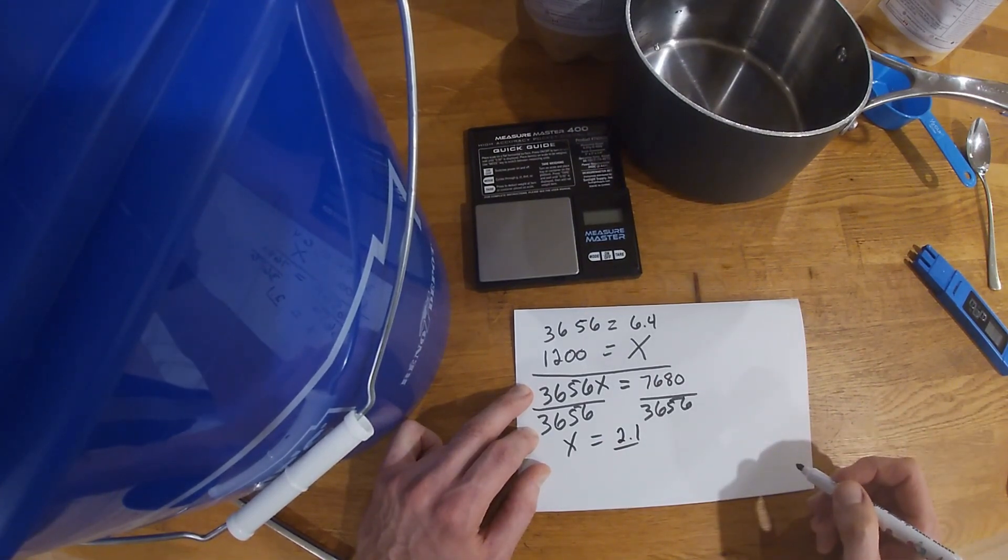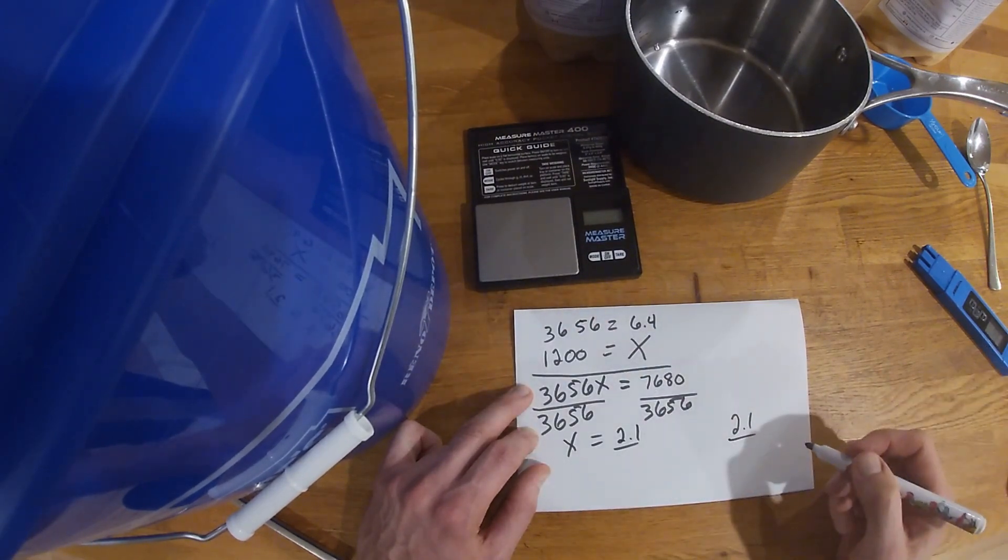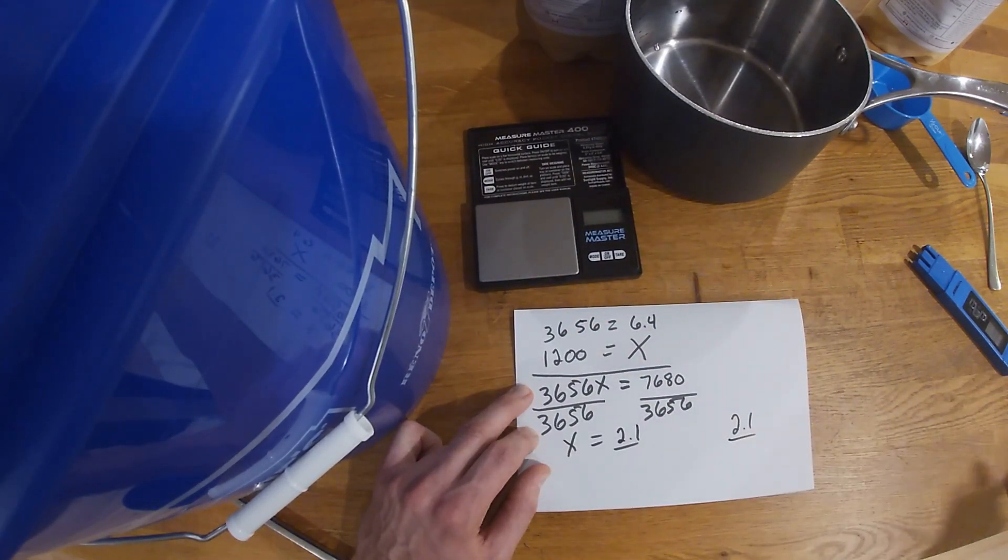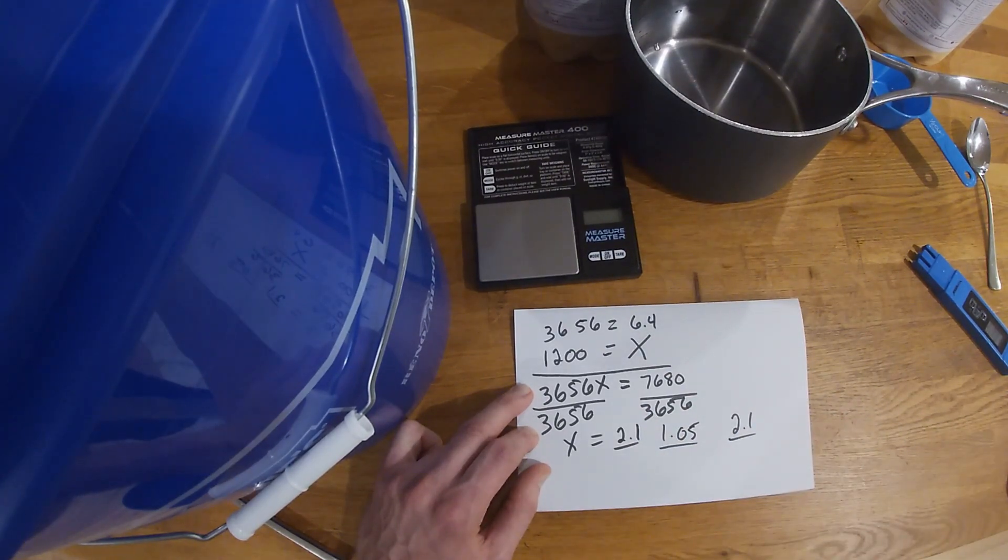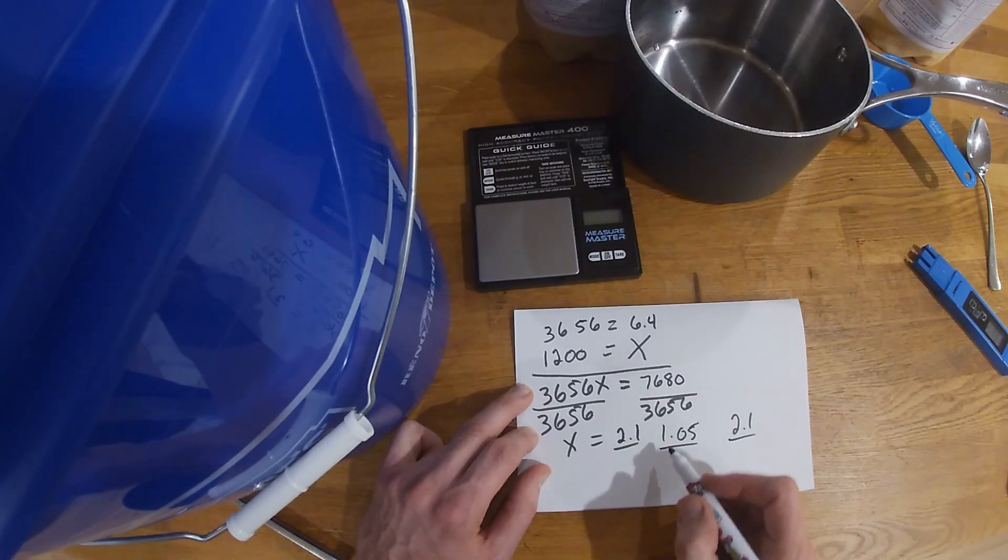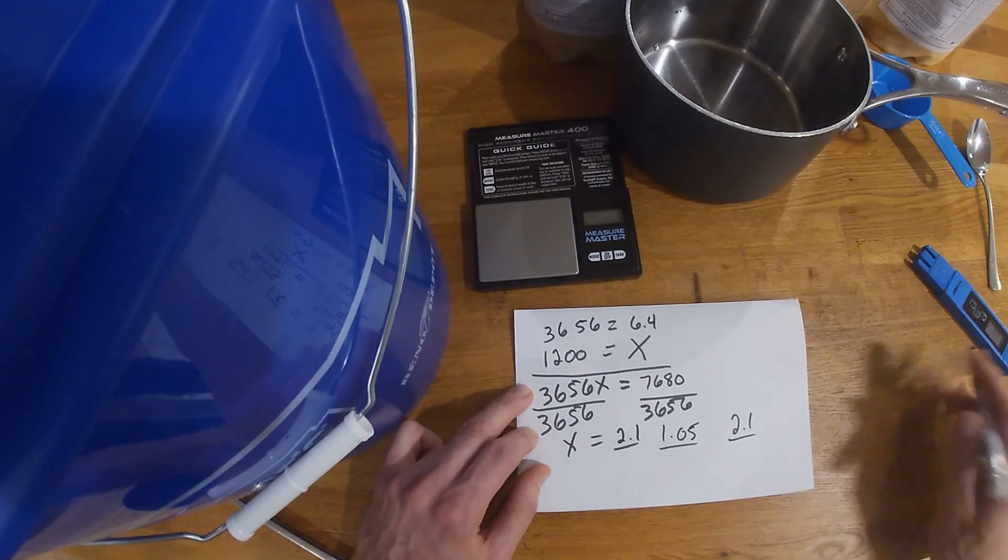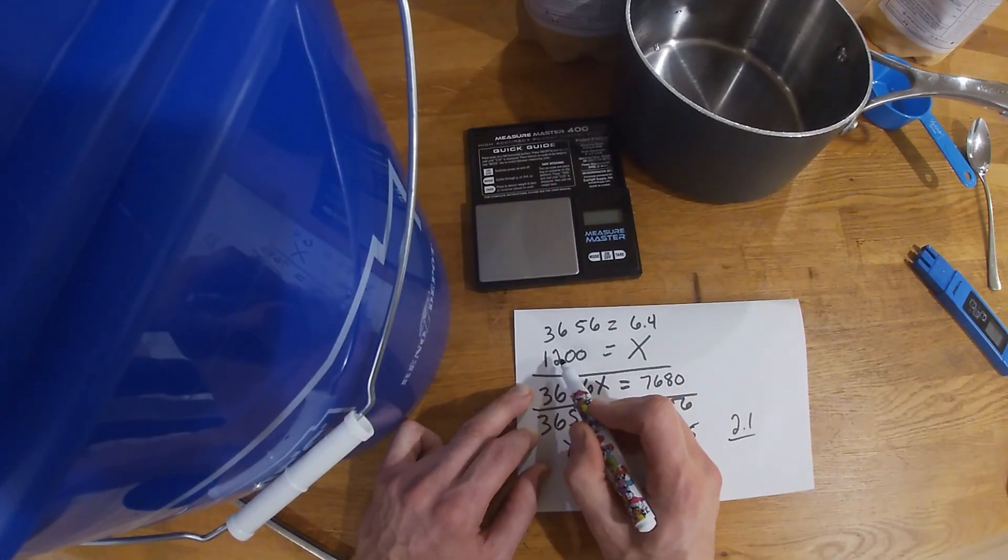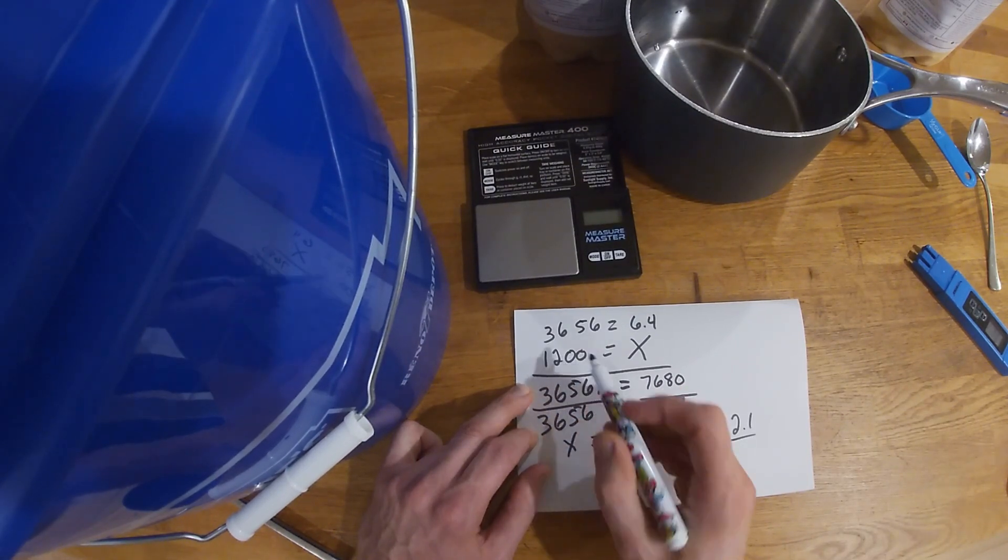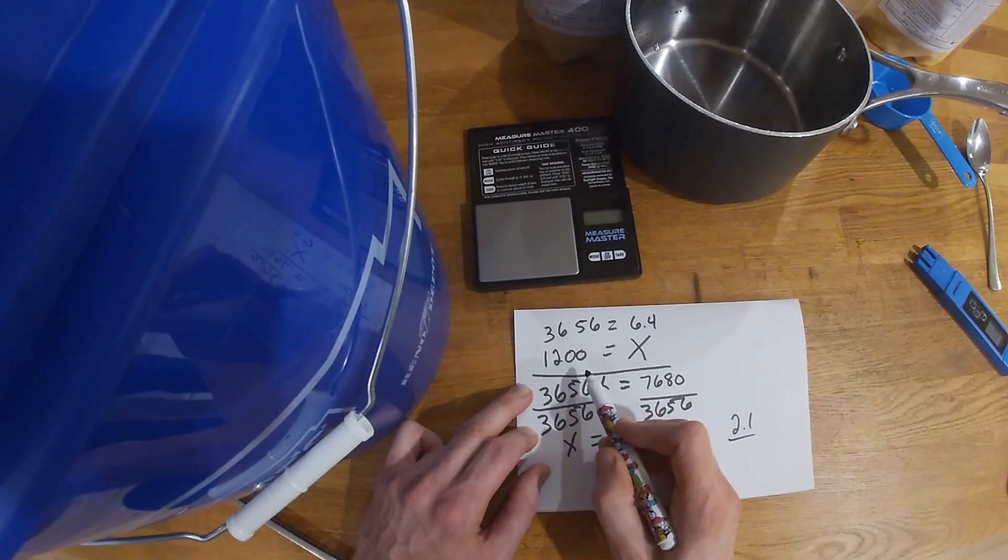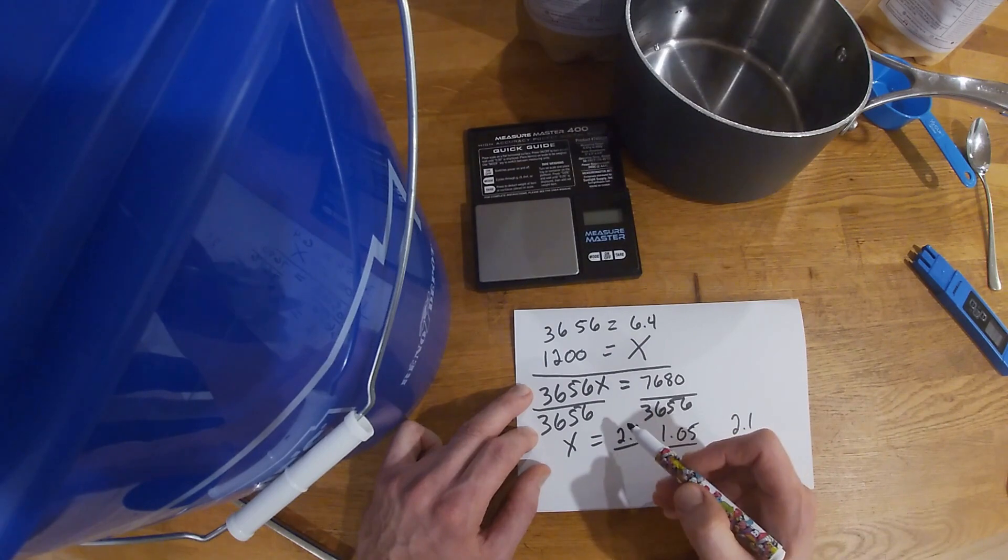We're also going to divide this side here by 3656. So X equals 2.1. So this is how many grams of lettuce formula you're gonna put in there. The calcium nitrate is the exact same number and the magnesium sulfate is half, so it's gonna be 1.05. That's how you calculate how much you want in EC levels without wasting. Now let's say you want 1200, I suggest that you mix for 1500. You want to go a lot more because it's easier to bring your EC levels down than to bring it up.